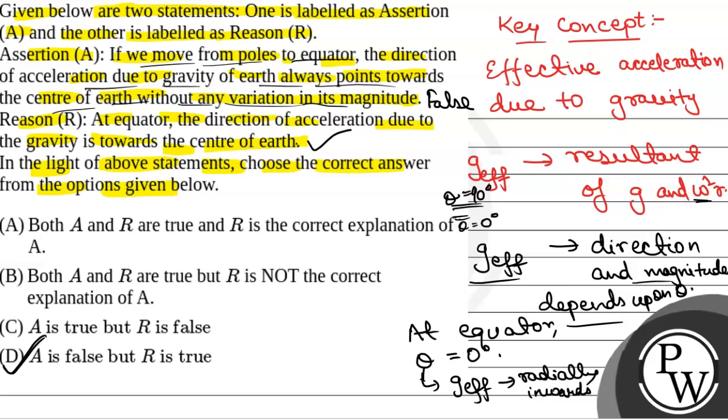So the correct option will be option D. Assertion is false, but reason is true. Hope you understood, best of luck.